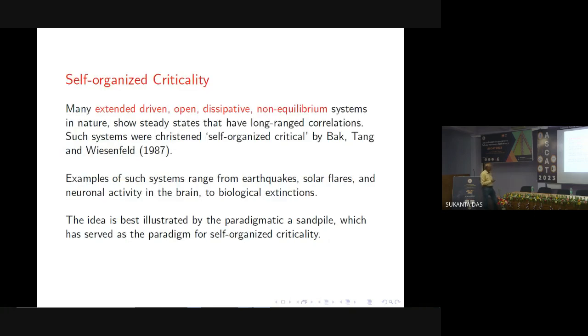First, let me start with self-organized criticality. So many extended, driven, open, dissipative, non-equilibrium systems in nature show steady states that have long range correlation. So this is a very long sentence with many adjectives. Each of them is very important. You have systems which are non-equilibrium systems, they are not in equilibrium and then the physics of non-equilibrium systems is not so well given up. They have dissipation in them and there is some energy current which goes in and out. So this is driven and open is more or less similar in this context. And extended means they have lots of degrees of freedom. And we want to understand these systems and quite often they show long range correlations.